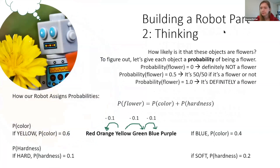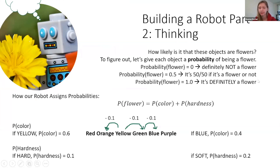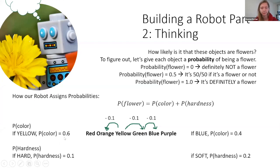When our robot goes through all of this, it has to figure out how likely it is that an object is a flower. The robot gives each object a probability of being a flower. Probabilities go from 0 to 1: a probability of 0 means definitely not a flower, a probability of 1 means definitely a flower. Most likely we'll get a reading somewhere in the middle — 0.5 is a 50/50 chance. The probability of being a flower is the combination of our two sensor readings: the probability from color plus the probability from hardness. Color is more important than hardness, so it gets more weight.